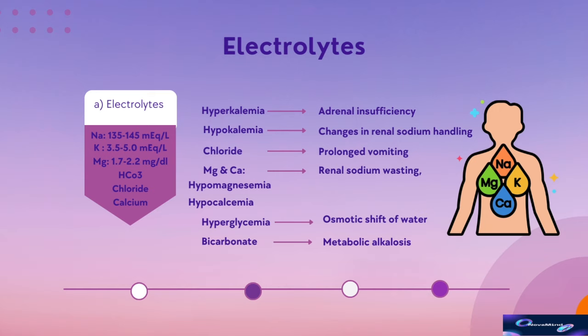With magnesium and calcium, severe hypomagnesemia and hypocalcemia can sometimes contribute to renal sodium wasting, thereby influencing hyponatremia. These electrolyte imbalances often coexist due to shared underlying causes. Hyperglycemia can lead to hypertonic hyponatremia — high blood glucose levels cause an osmotic shift of water from the intracellular to the extracellular space, diluting sodium concentrations. Metabolic alkalosis can affect sodium balance and distribution, but the relationship is complex and often involves multiple factors including renal function and respiratory compensation. In clinical practice, it's essential to consider the overall electrolyte balance and look for potential causes or contributing factors that might affect sodium levels.